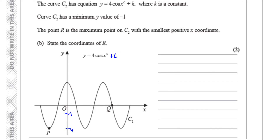So basically it has to rise up by 3 units to get a minimum value of minus 1. Therefore y equals 4 cosine x plus 3 — that will give us a minimum value of minus 1. Right now the minimum value is minus 4, so by adding 3 to the whole function, that causes a vertical translation of 3 units upwards.